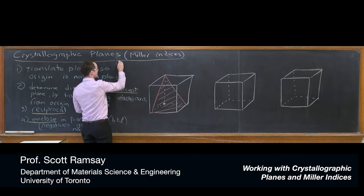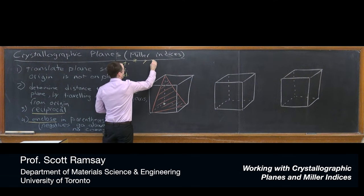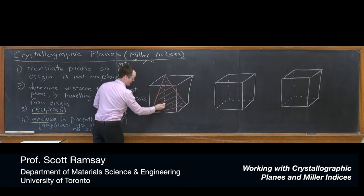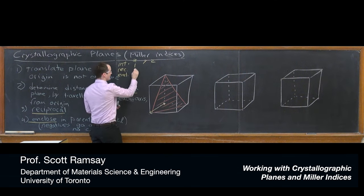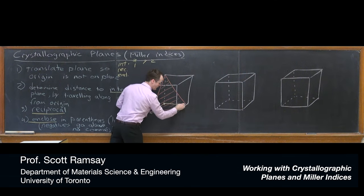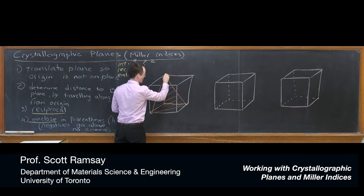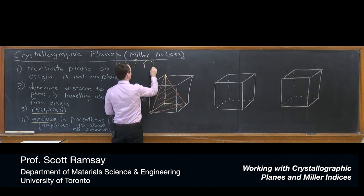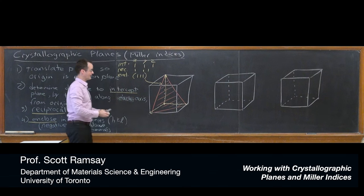We're going to determine the intercept, take the reciprocal, and then enclose for X, Y, and Z. From this origin, we travel 1 in the X direction, 1 in the Y direction to hit the plane, and 1 in the Z direction to hit the plane. There's no reductions necessary, and the enclosure becomes (1,1,1). This is the (1,1,1) plane.